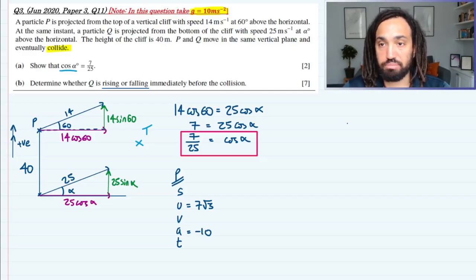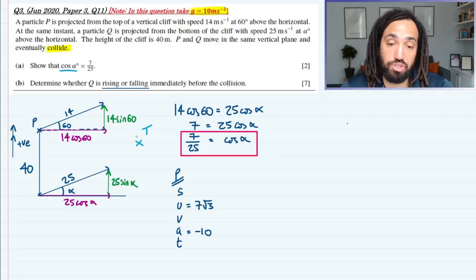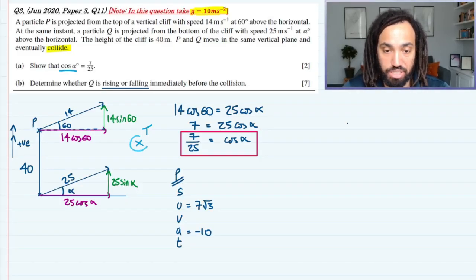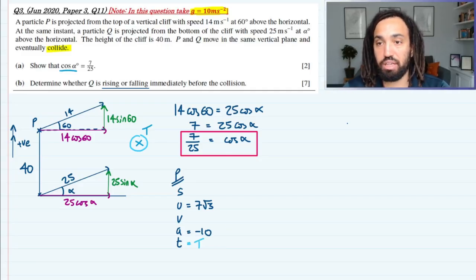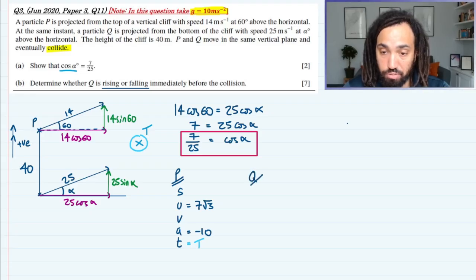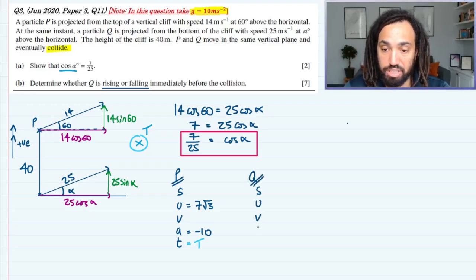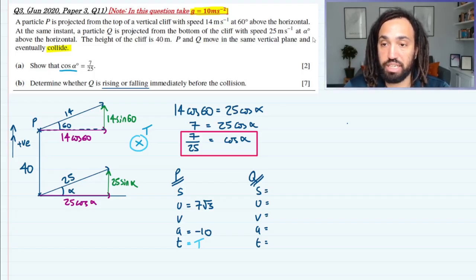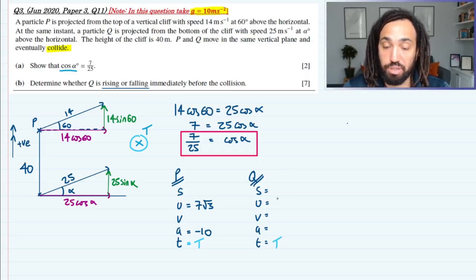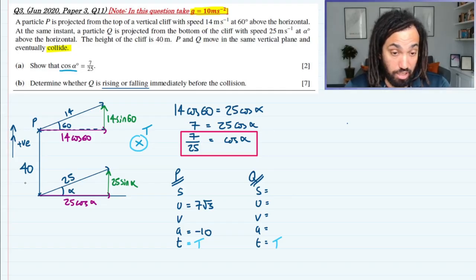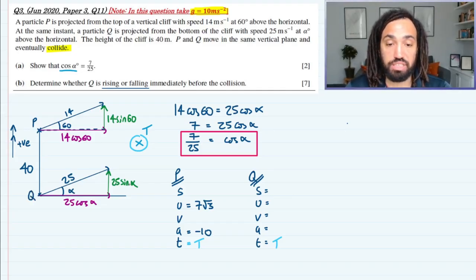We're going to investigate the only really interesting point in space and time here, which is where they meet, where they collide. So we know that's going to be capital T in terms of time it takes to get there. That's great because what we could do for Q is exactly the same thing, and then we have something which links the two equations, and that is that they meet at the same time. So we're going to investigate the same point in time. We know the initial velocity for Q, which I should have labeled there, is 25 sin alpha.